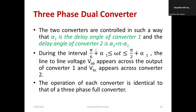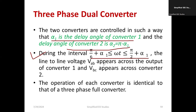The operation can be explained in terms of firing angles. Alpha_1 is the delay angle of converter 1, and the delay angle of converter 2 is pi minus alpha_1. So the sum of alpha_1 and alpha_2 equals 180 degrees. The delay angle lies in the range: alpha_1 + pi/6 ≤ ωt ≤ pi/2 + alpha_1. During this period the device turns on, meaning V_AB appears across the output of converter 1 and V_BC appears across converter 2.